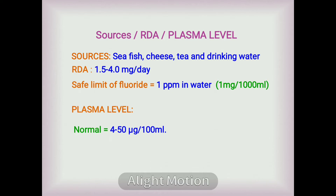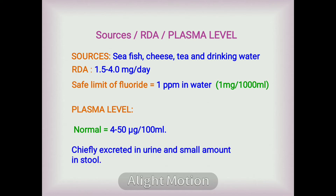The normal serum level of fluoride is 4 milligrams per 100 ml, which can increase up to 50 milligrams per 100 ml in chronic fluorosis. Excretion is chiefly in the urine, but a small amount is excreted in the stool.